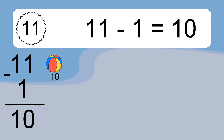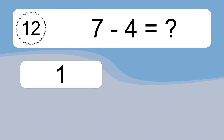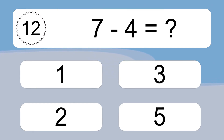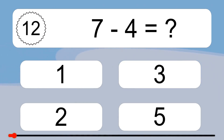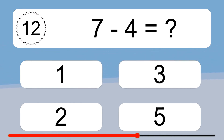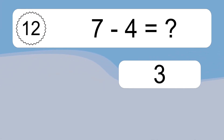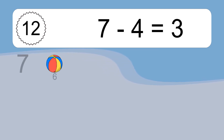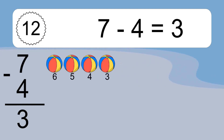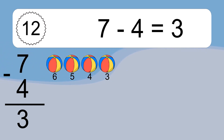7 minus 4 equals what? 7 minus 4 equals 3. Let's count it: 6, 5, 4, 3.